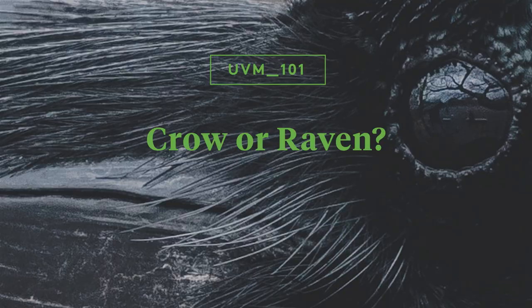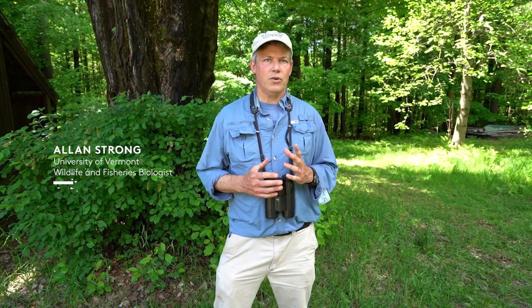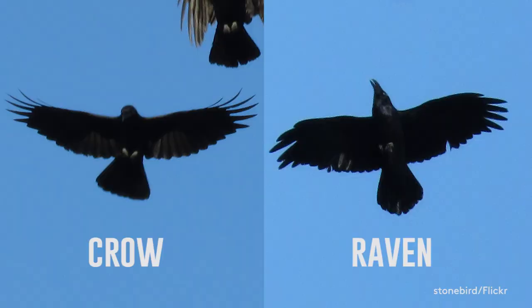A common question that I get is, how do you tell an American crow from a common raven? They can be challenging to tell apart. The first tip, if you get a relatively good look at them, is by the pattern of the tail.